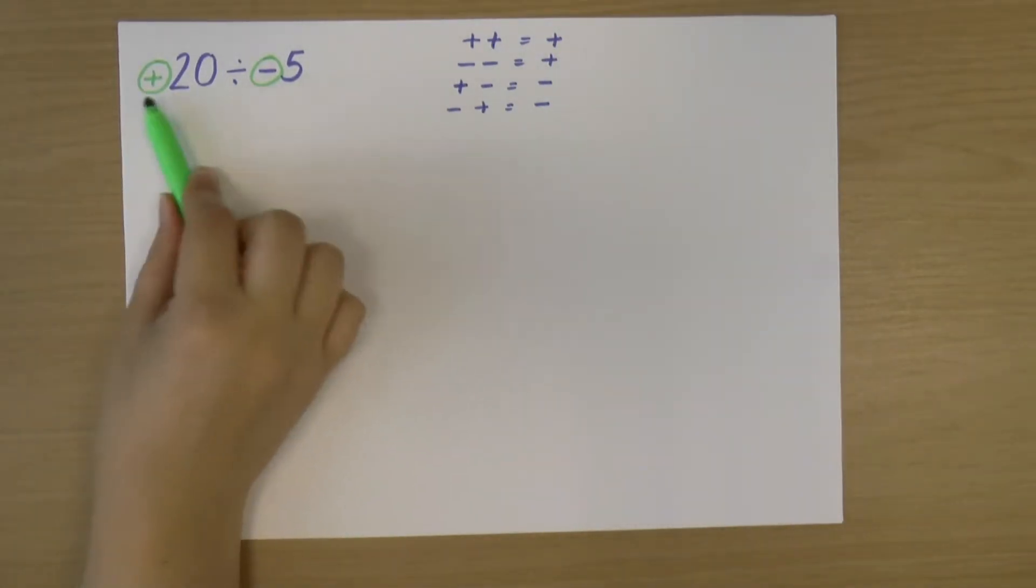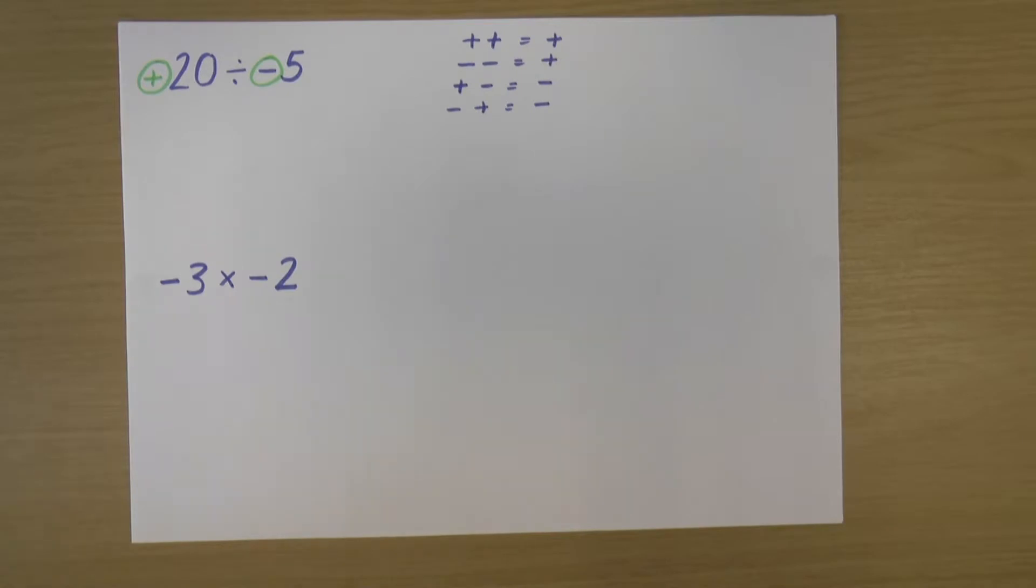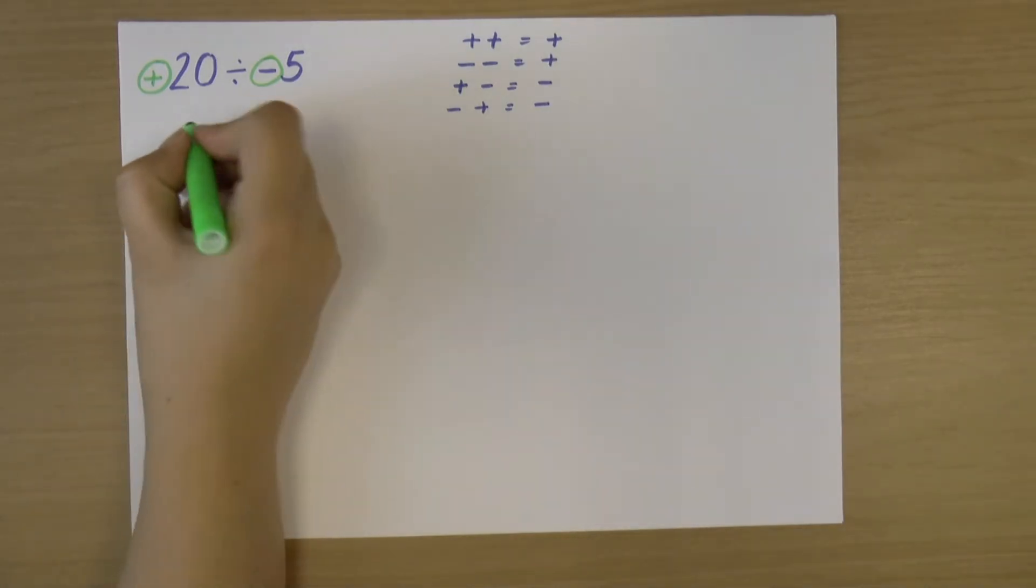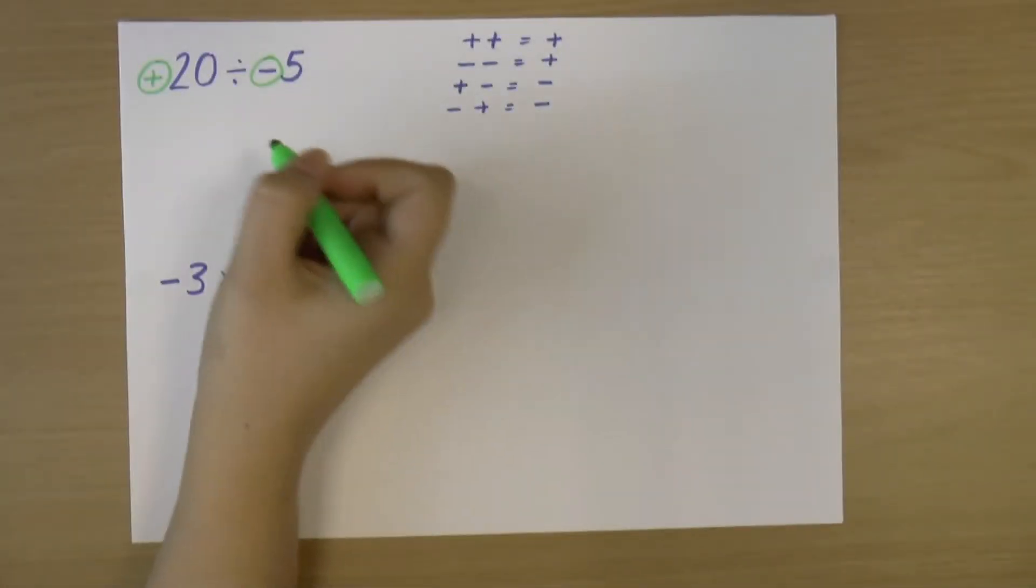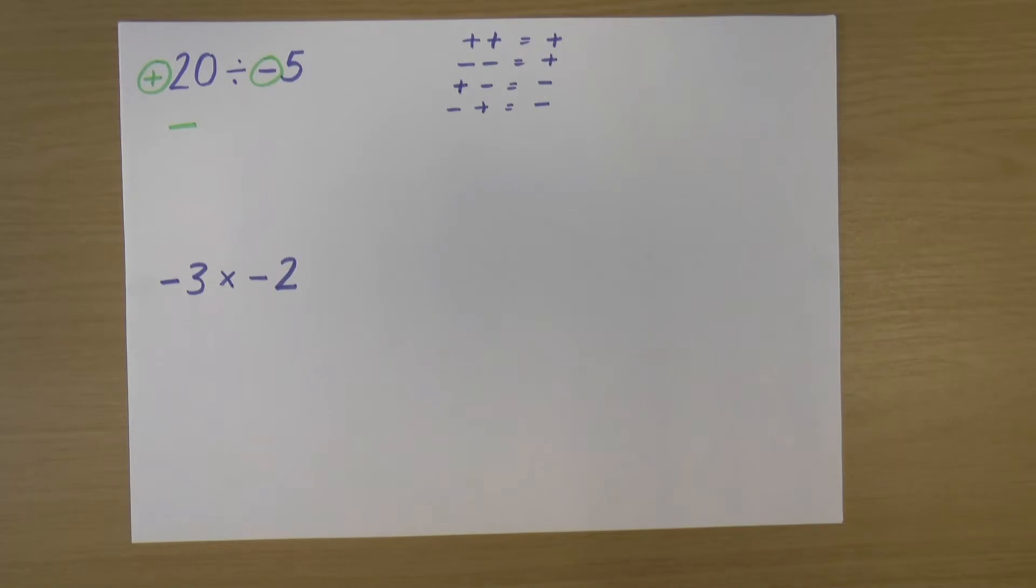So I'm going to look at these two symbols in front of the numbers. So I've got a positive there and a negative there. So a positive and a negative means I will have a negative. So my answer will be a negative. OK.